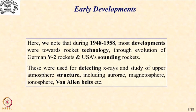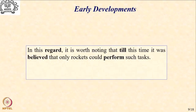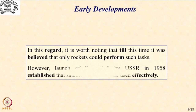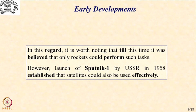The rockets were used to study the magnetosphere, ionosphere, Van Allen belts, etc. Until this time there was a belief that only rockets could perform such tasks, and that is why in the initial stages most of the space missions were restricted to rockets. However, this belief was broken when USSR in 1958 launched Sputnik 1 and established the fact that satellites could also be used effectively.